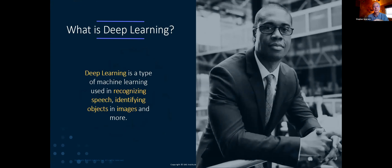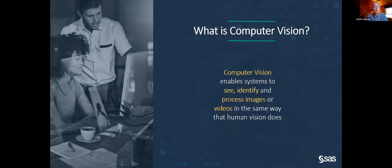Deep learning is a specialized type of machine learning used in speech recognition or object detection and classification using images or photos. Deep learning differs in that it typically needs larger amounts of data, and the data doesn't necessarily have to be structured. It can use different concepts about the data to categorize and contextualize information and drive action. One specialization is computer vision — using vision to capture images, identify objects, process and crop images, and detect where objects are in pictures or videos.